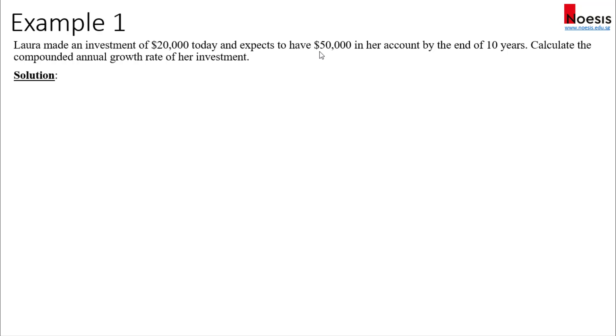We will assume that it's compounded annually since it's not mentioned here. You invest $20,000 today and at the end of 10 years you will have $50,000. So $20,000 invested today and $50,000 in the future. I'm going to find out what's the rate of growth for it to achieve this target or this future value.